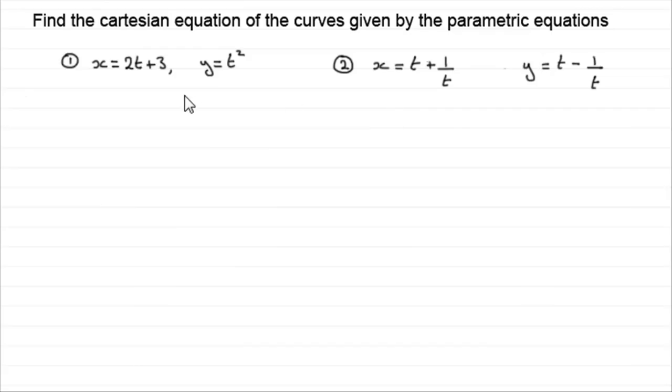I've got two examples here. The second example is a lot harder though to do than the first one. Now, when we're trying to get the Cartesian equation, what we've got to do is eliminate the parameter. In this case, the parameter is t between the two equations. We're looking to get an equation involving just y and x.